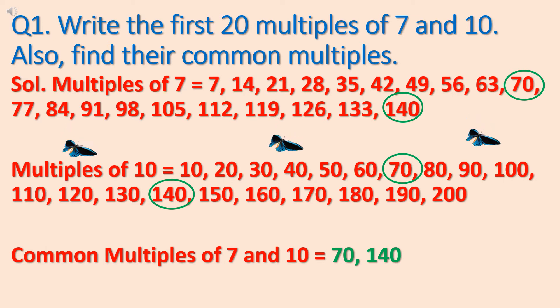Next, what will we do? We will write multiples of 10. First 20 multiples of 10. And it is the easiest one. 10, 20, 30, 40, 50, 60, 70, 80, 90, 100. Then 110, 120, 130, 140, 150, 160, 170, 180, 190 and 200. You know the skip counting of 10. So it is very easy for you to write multiples of 10.